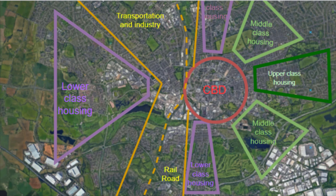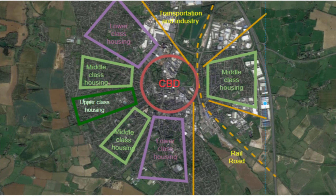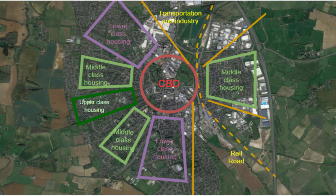In this example, we can clearly see the railroad and industrial zone. By zooming in and comparing the quality of housing, the lower, middle, and upper-class housing was determined. The commercial area was full of shops, cafes, and stores, so we could identify the CBD too. Another example is Bunbury, which further proves the accuracy of the model.